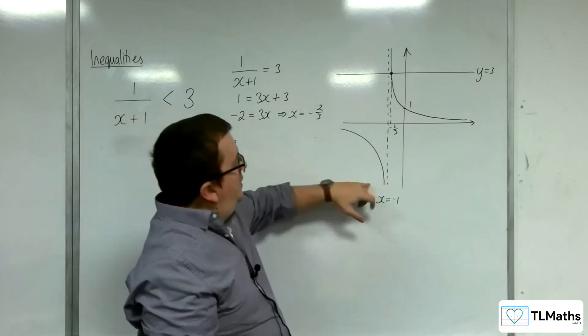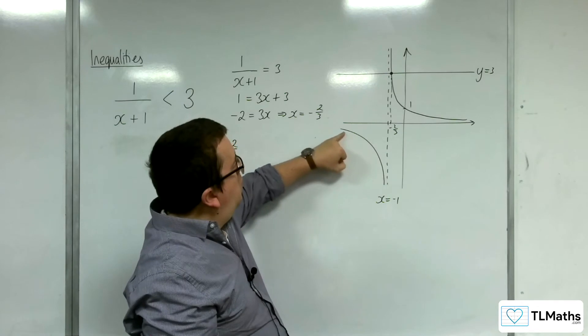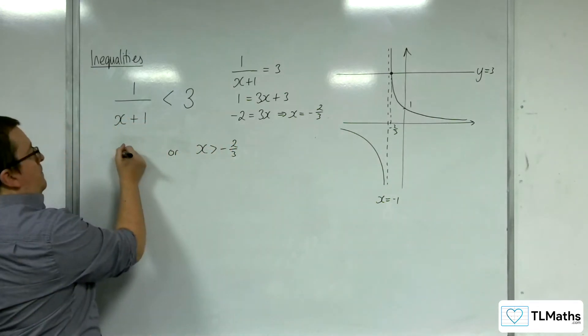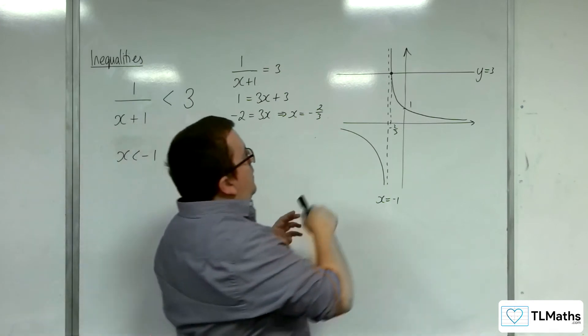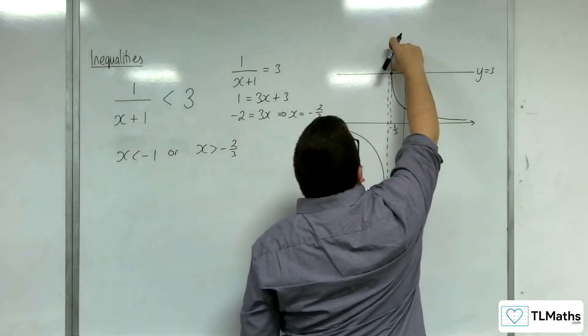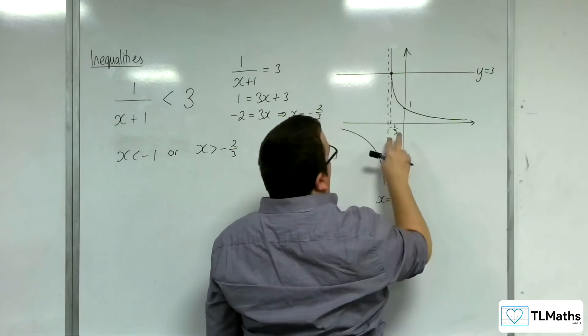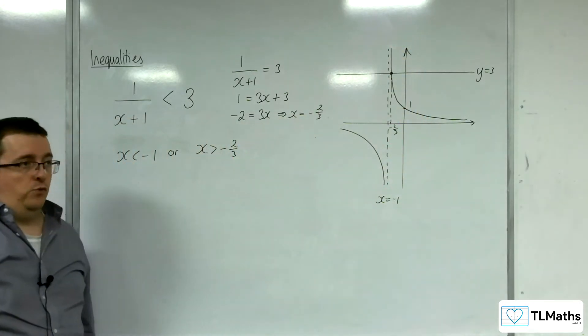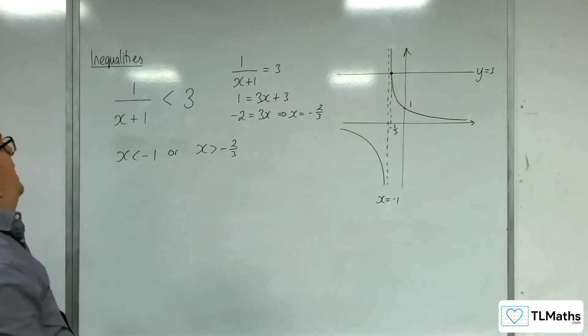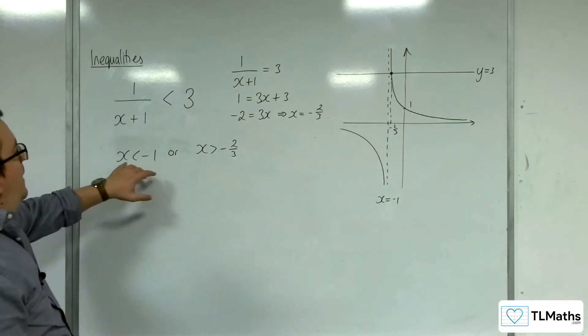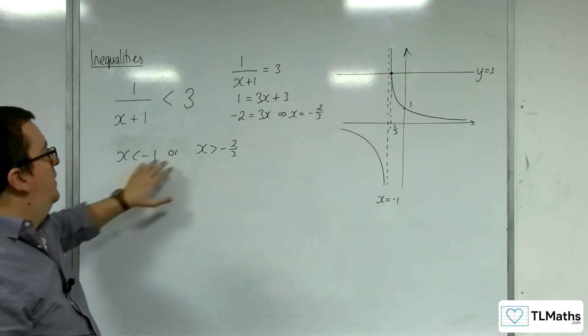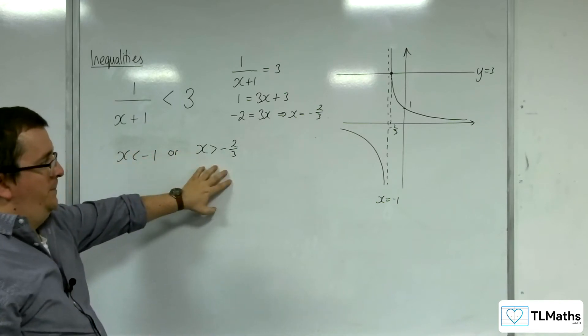But on the left-hand side, you've got this portion of the graph as well, so that's when x is less than minus 1. It's only this bit up here, between the minus 1 and the minus 2 thirds, where the graph is above y equals 3. So, anything but that, really. x is less than minus 1, or x is greater than minus 2 thirds.